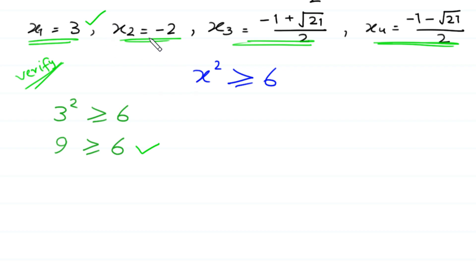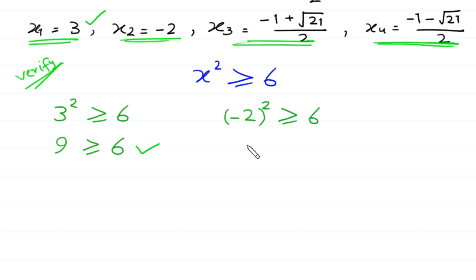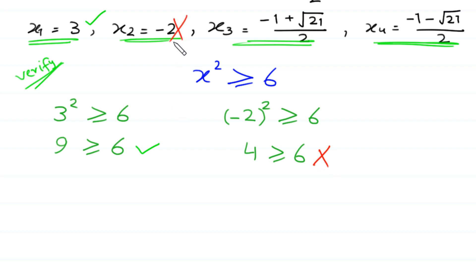Now we check x equals negative 2. Negative 2 squared is 4, and 4 is not greater than or equal to 6, so this condition is false. We reject this solution — x equals negative 2 is not a solution.